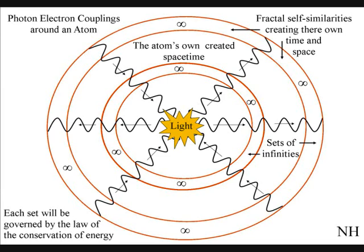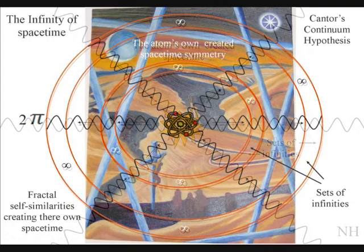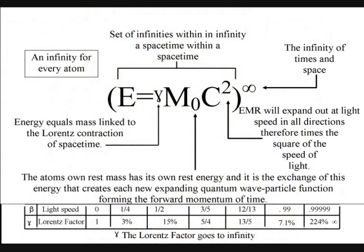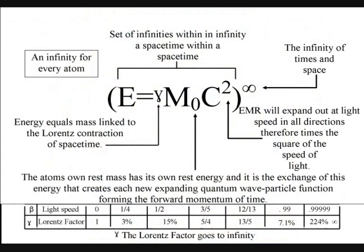In quantum atom theory, infinity is an actual reality of our universe, not a mathematical paradox. Infinity can always be divided into ever-decreasing or increasing sets of infinities. This is because each atom is creating its own space-time geometry by the forward expansion of time that can always be divided into sets of infinities.